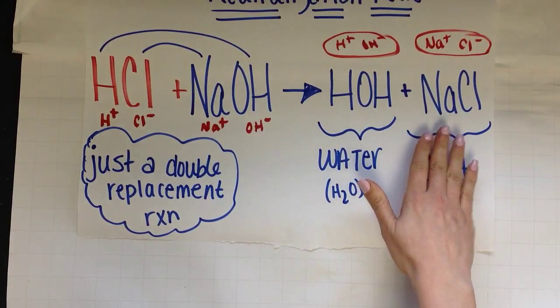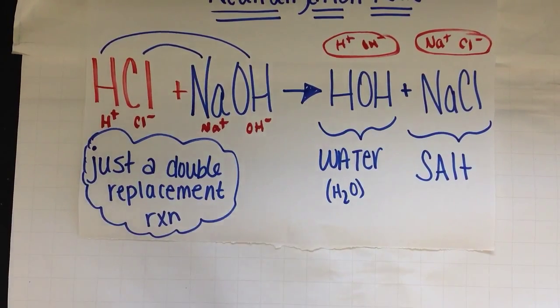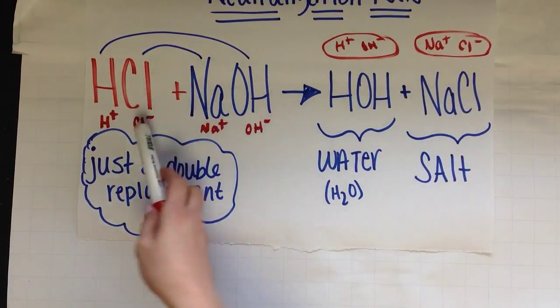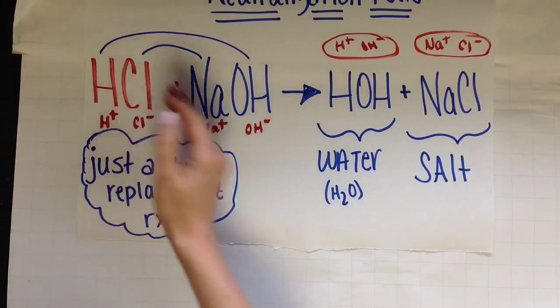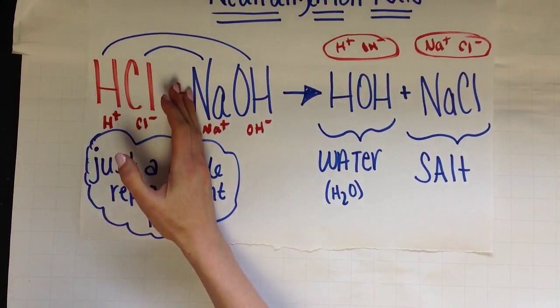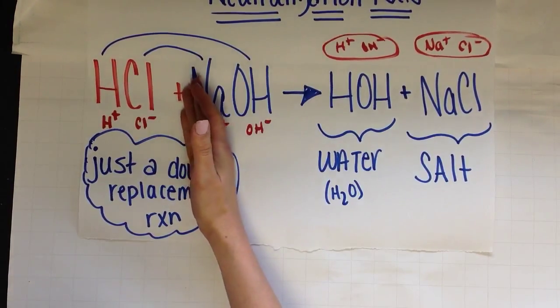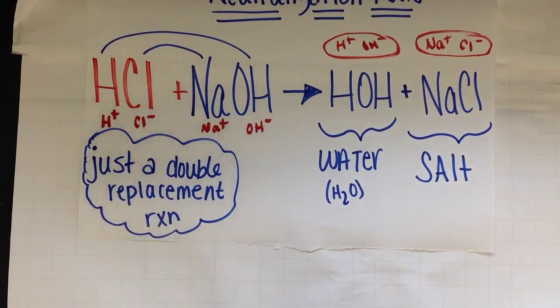Remember, any ionic compound is salt. This is just table salt. So again, just a double replacement reaction. The last thing you want to do is make sure it's balanced. And in this one, I have everything balanced. So it's a 1-to-1-to-1-to-1. In other words, one mole of HCl needs one mole of sodium hydroxide to make my products, one mole of each product. So it's one mole of NaOH for one mole of HCl. That's really important.